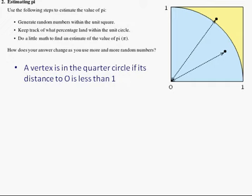Question 2. We can see that we have a unit square and a quarter unit circle. We observe that a vertex is in the quarter circle if its distance to O is less than 1.